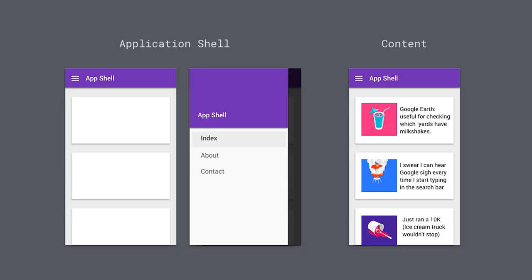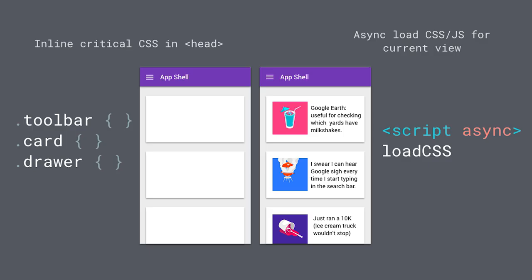The first common pattern is that everyone will have static assets they want to cache — stuff that might make up an application shell, like images, CSS, and icons. Things like logos are a great example where you'd probably want to cache them up front because they rarely change, and you've got solid control over them.